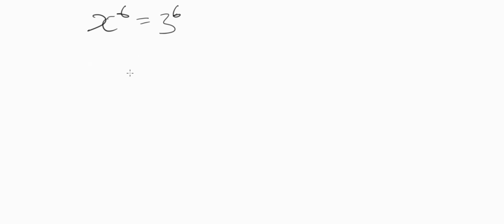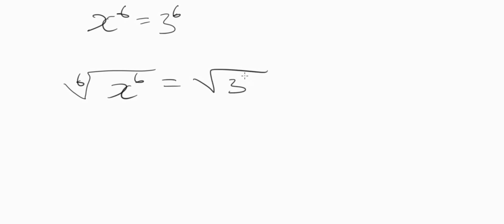I did solve this olympiad math without a calculator. All you need is to find the 6th root of both sides. The 6th root of both sides gives us: the 6th root of x to the power of 6 equals the 6th root of 3 to the power of 6. The 6 power and the 6 root cancel on both sides, showing us that x equals 3.